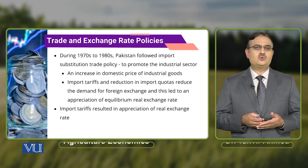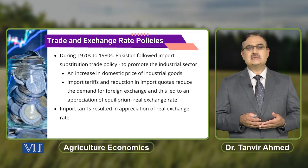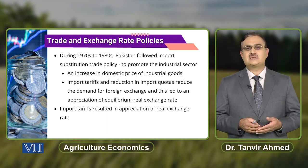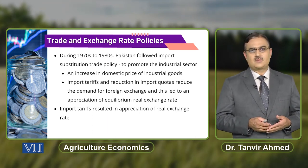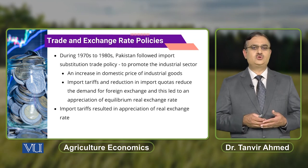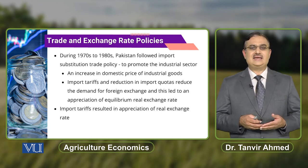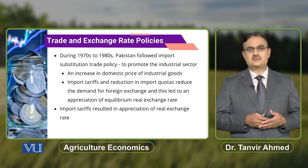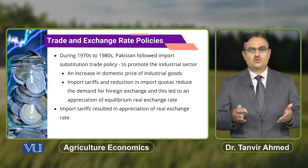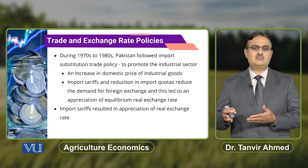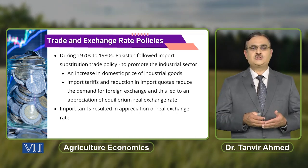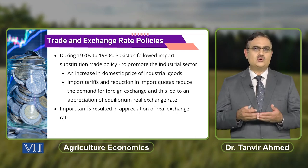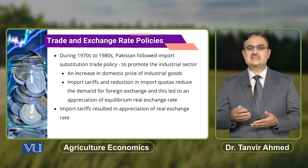During the 1970s to 1980s, Pakistan followed an import substitution trade policy to promote the industrial sector. Because of these import substitution trade policies, there was an increase in domestic prices of industrial goods. Import tariffs and reductions in import quotas were applied, resulting in reduced demand for foreign exchange.